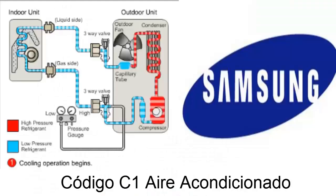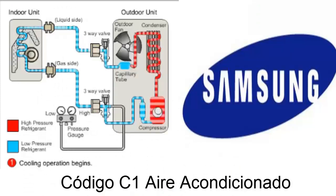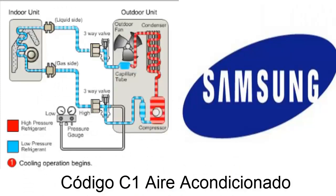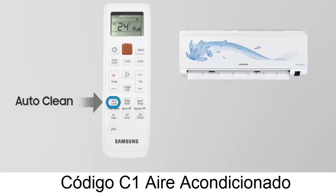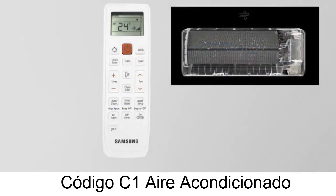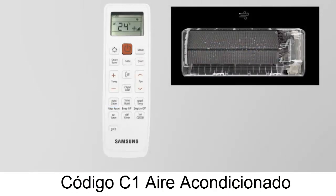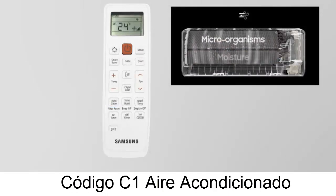C1 error in Samsung air conditioners: In Samsung air conditioning systems, the C1 error suggests that the auto-clean function needs to be activated. This problem is commonly due to high humidity levels in the interior section of the unit.